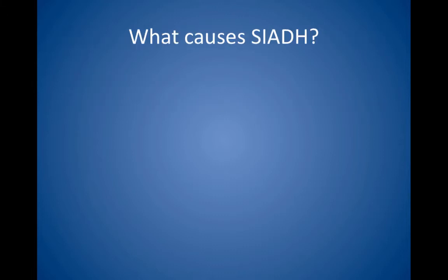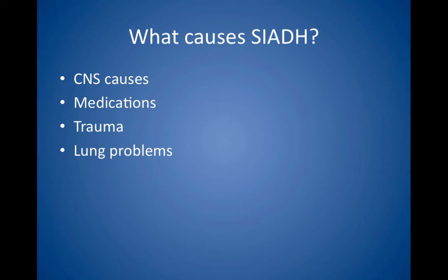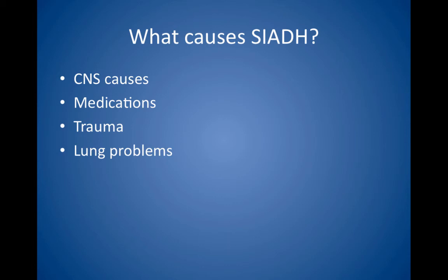What causes SIADH? Central nervous system causes include stroke, hemorrhage, infection, and trauma. Medications including narcotics, oxytocin given to pregnant patients, chlorpropamide, and antiepileptic agents can cause SIADH. Trauma may also cause SIADH, as pain is a powerful stimulus for ADH. Watch for the postoperative patient who is receiving fluids and often narcotics and also has pain. Finally, lung problems can cause SIADH, ranging from a simple pneumonia to an ADH-secreting small cell cancer of the lung.